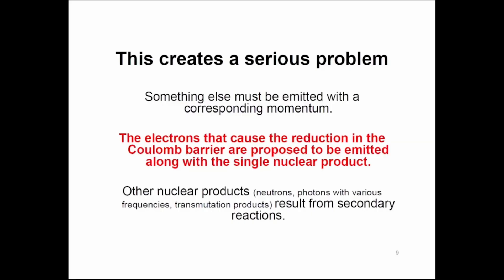That problem created the need to explain this with very complex theories, some of which you saw yesterday. However, it's possible to explain this in a very simple way, and that is by the electrons that are in the nuclear active environment and are used to overcome the Coulomb barrier. They themselves are emitted and carry away the energy. The other nuclear products result from secondary reactions that have been detected.